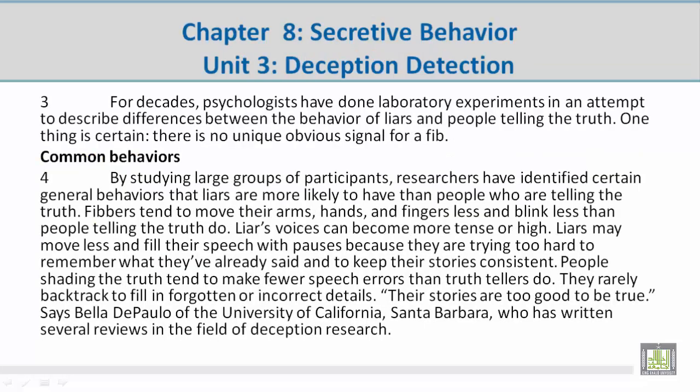Paragraph 3: For decades, psychologists have done laboratory experiments in an attempt to describe differences between the behavior of liars and people telling the truth. One thing is certain: there is no unique, obvious signal for a fib.